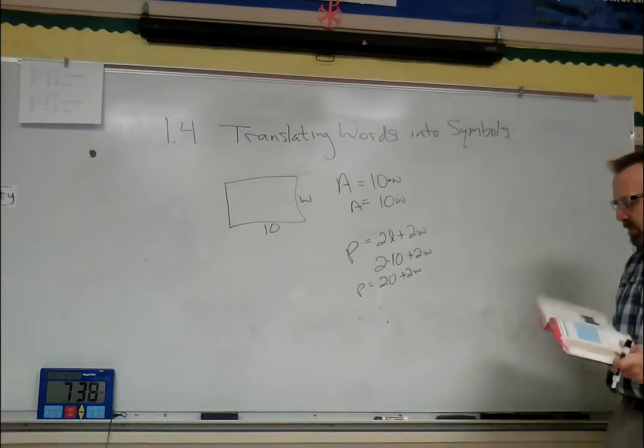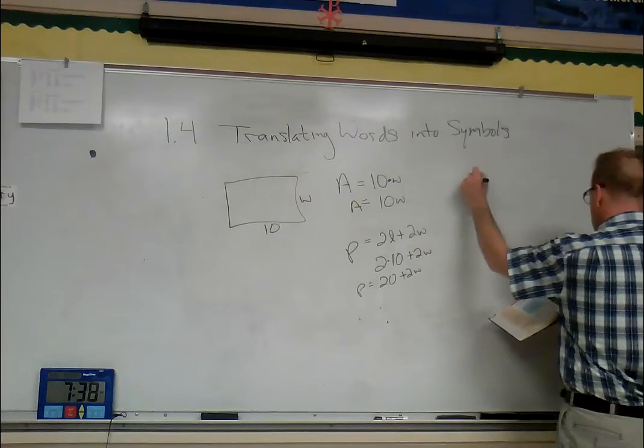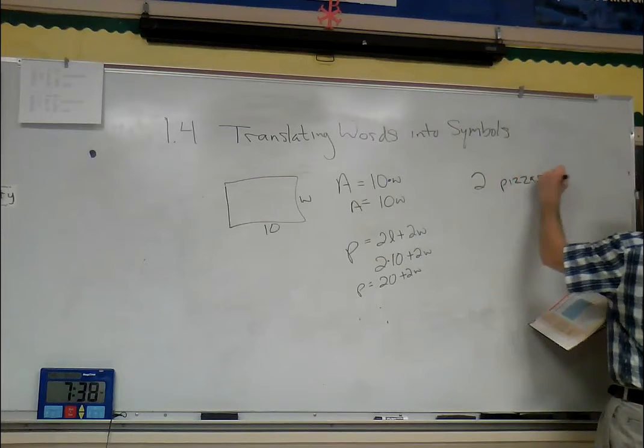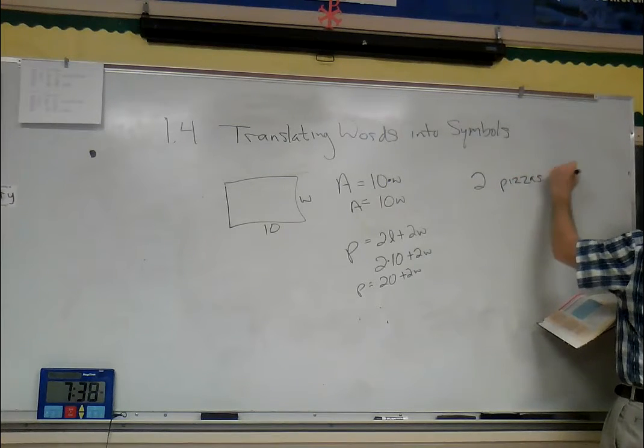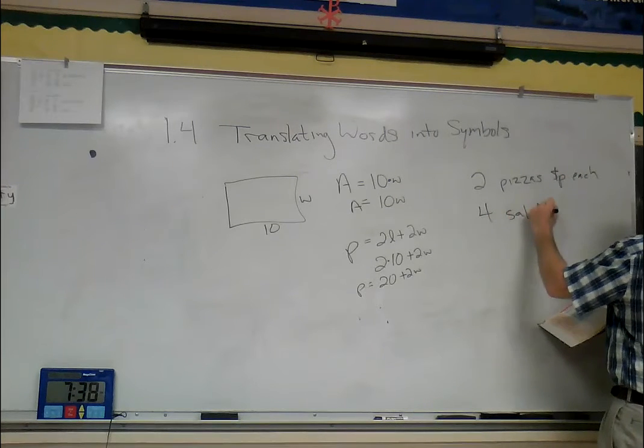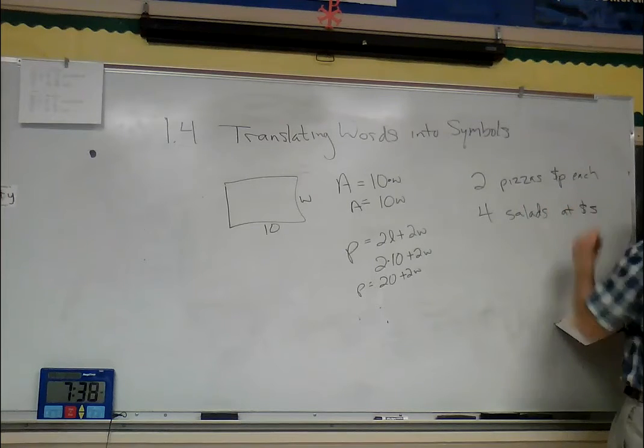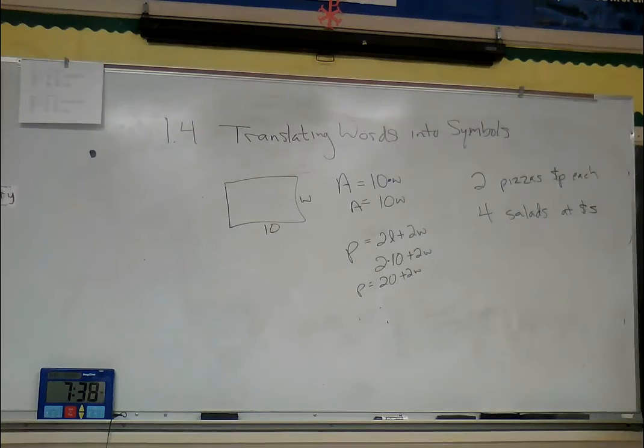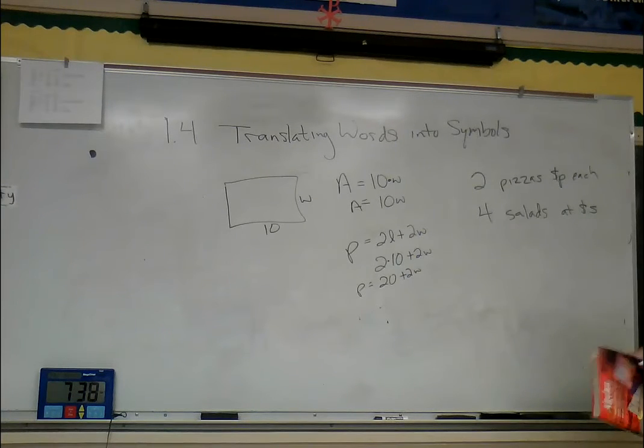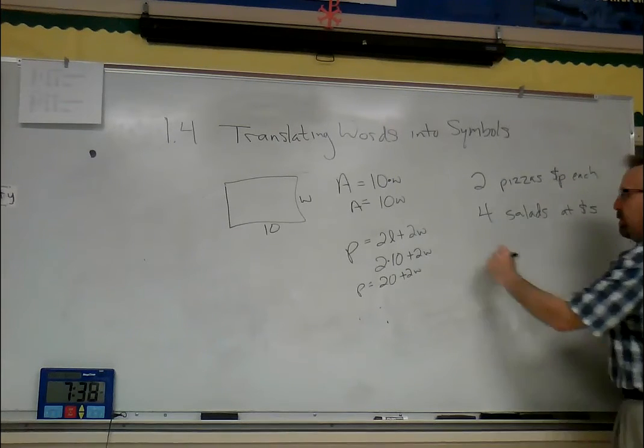Example four says you and your friends buy two pizzas at P dollars each, and four salads at S dollars each. How much do you spend? On pizzas, each one is P dollars, so how much total on pizzas? 2P.